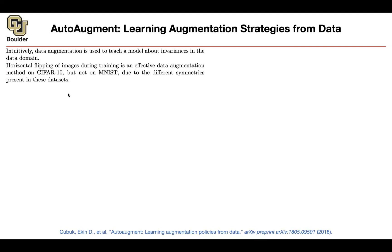There is another observation motivating automatic data augmentation: each dataset is going to have its own augmentation. For instance, on CIFAR-10 or ImageNet, flipping the image — looking at it in the mirror — is very effective, because a tiger flipped in a mirror is still a tiger. But for MNIST, flipping is not a good idea, because a number 2 will end up looking like something that doesn't resemble a number anymore. Maybe flipping is good for 8, but for 9 it gives you a different number. So each dataset is going to have its own augmentation policy.